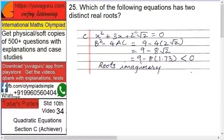3, a equals to 1, and c equals to 2√2. Therefore b² - 4ac: 9 - 4 into 1 into 2√2. So solve this: 9 - 8√2. Now √2 is what? 1